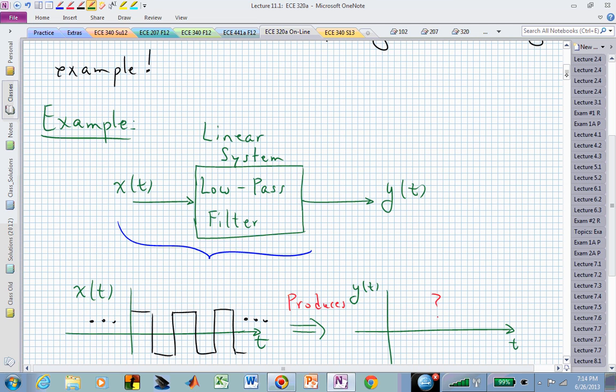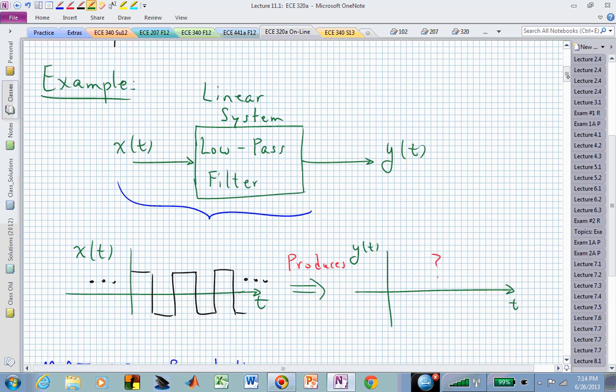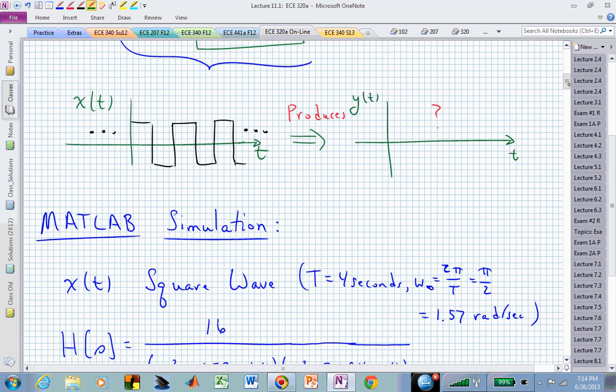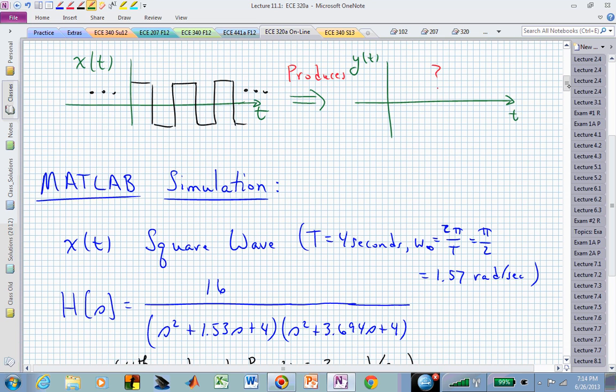And how that combines with the periodic signal x of t—what does that produce? What I've tried to do is actually provide a MATLAB simulation of this to just provide us again with some intuition into what's going on.